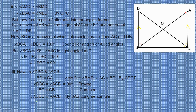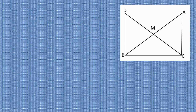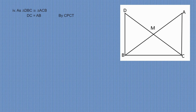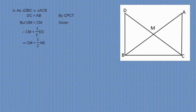Now let's show CM equals half of AB. Since triangle DBC is congruent to triangle ACB, DC equals AB by CPCT. But DM equals CM (given). Therefore, CM equals half of DC. This implies CM equals half of AB. Hence, DC equals AB, and the result is proved.